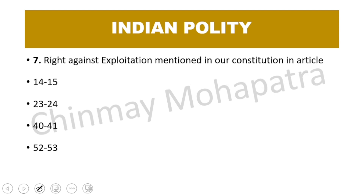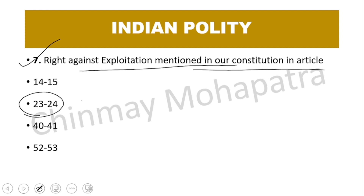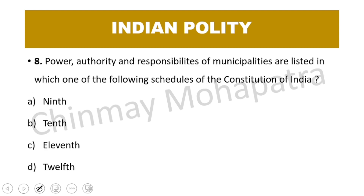Question number 7: The Right against Exploitation is mentioned in our constitution in which article? The right answer is Articles 23 and 24.